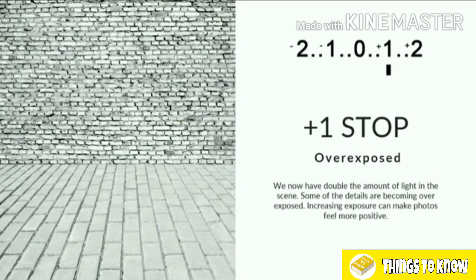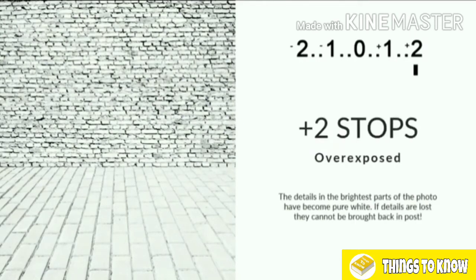Technically, the correct exposure is at zero, but creatively we might decide to add a little bit more light to make it a little bit brighter. Going up to two stops over, we now have four times the amount of light coming in — things are getting a little too much. We're losing details in the brickwork, just seeing outlines, and it doesn't look good. Remember, if details are lost, we cannot always bring them back in post-production. Sometimes you might get lucky, but if highlights or whites are gone and you try to bring them back, they're going to look muddy and flat.